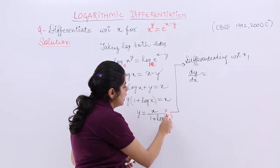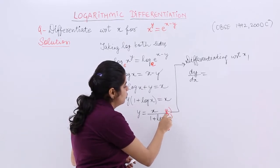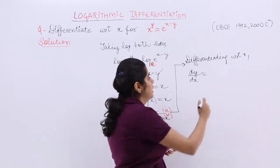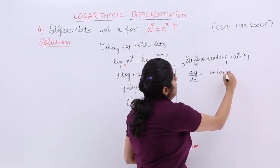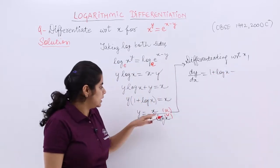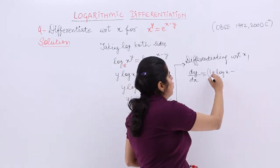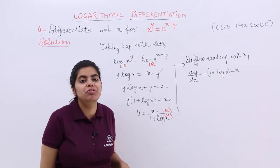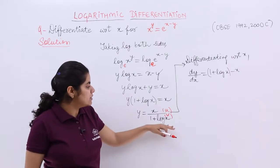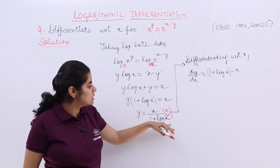u dash if this is u, this is v. I write here v. I write here u. u dash v minus u v dash minus u into v dash means the differentiation of the denominator. What is v dash? 1's differentiation 0, log x differentiation 1 by x.